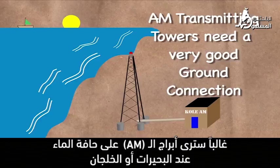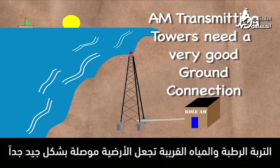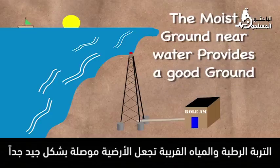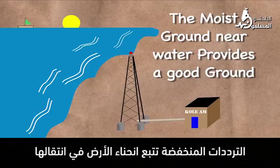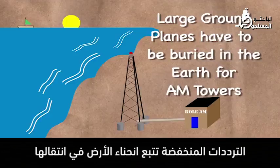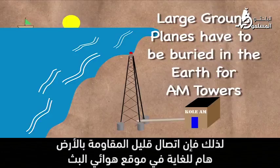Often you'll see AM towers at the water's edge on a lake or bay. The moist ground and the nearby water makes for a very conductive ground plane, which is important for AM broadcasting. Low frequencies tend to follow the curvature of the earth as they travel, so a low resistance connection to the earth is very important at the transmitter site.